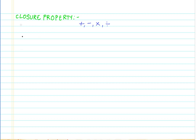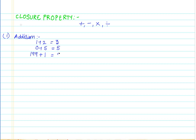Let me explain in more detail. Let's start with addition. We try to add two whole numbers: 1 plus 2 gives 3; 0 plus 5 gives 5; 199 plus 1 gives 200. You can keep going and take as many examples as you like — 999 plus 2 equals 1001, or 7 plus 10 equals 17. We have added two whole numbers and obtained a result.